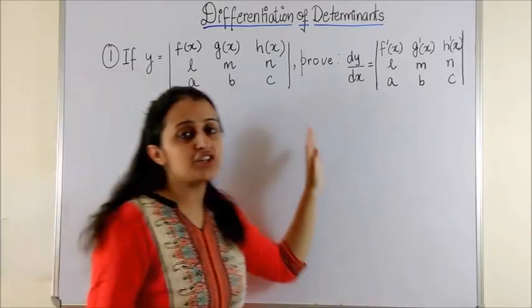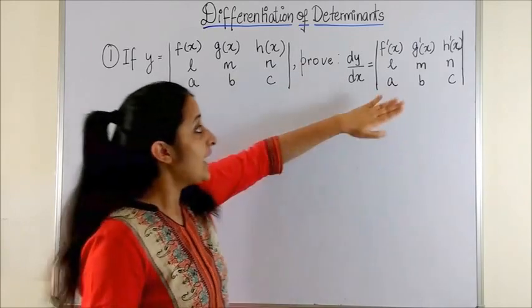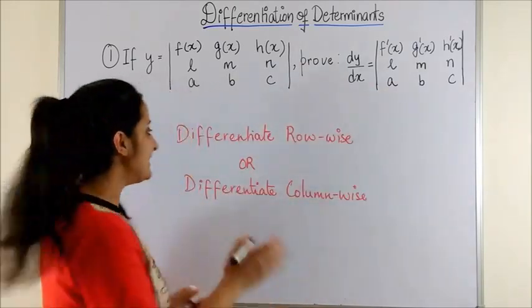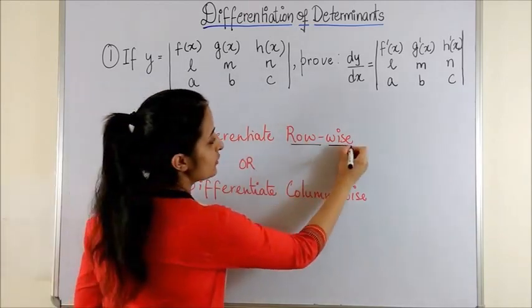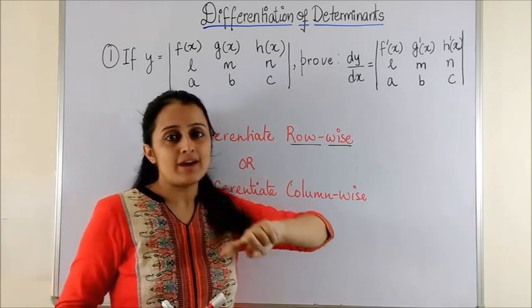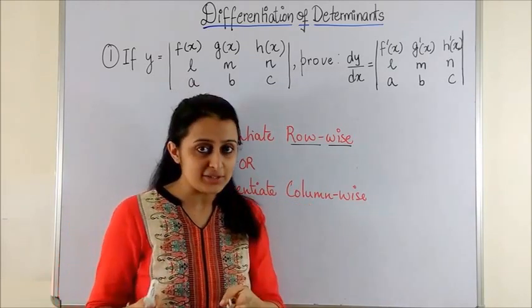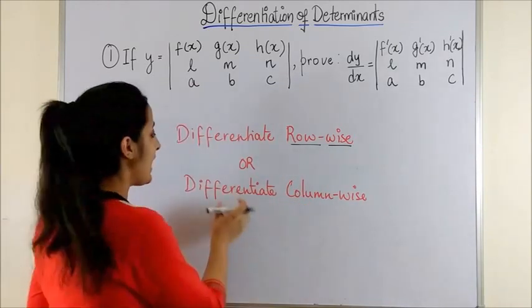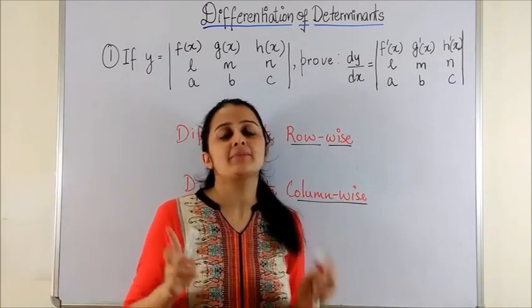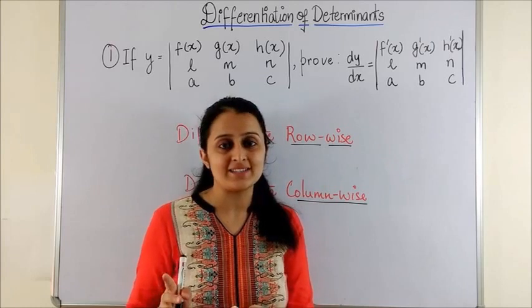If we are given the function in terms of a determinant, how do we get dy/dx? It's a simple rule: either try differentiating row-wise, that means differentiating one row at a time and keeping the other two as they were, or differentiate column-wise, differentiating one column at a time and retaining the other two as it is.